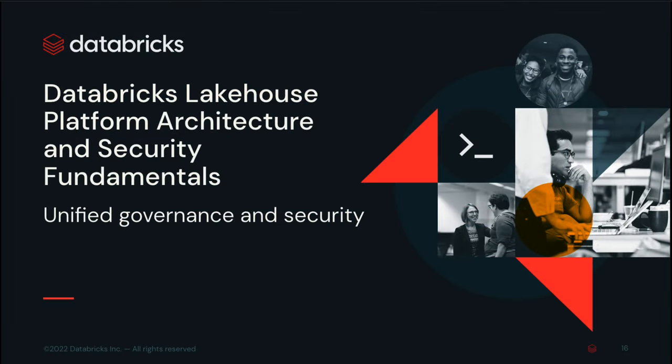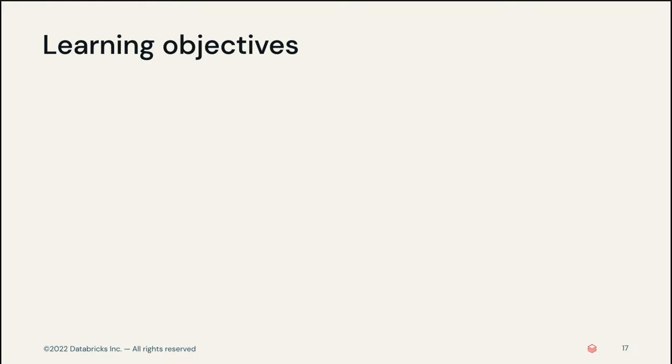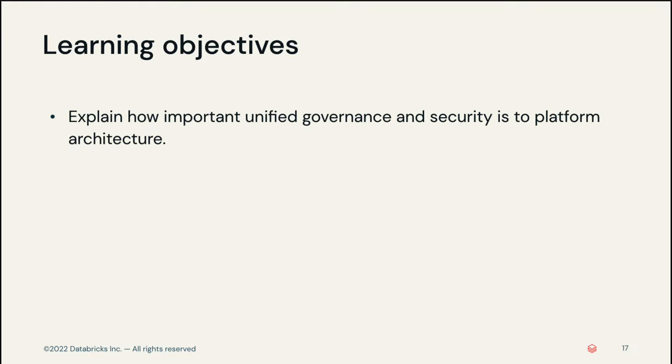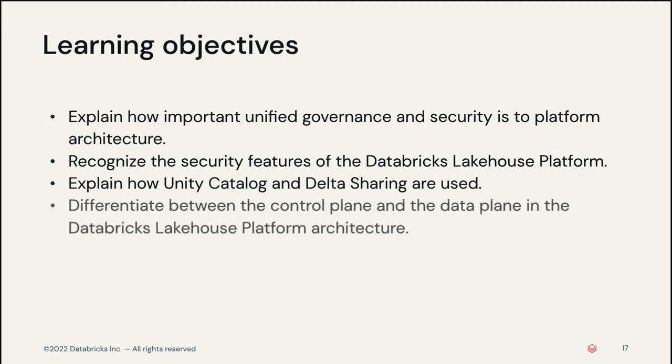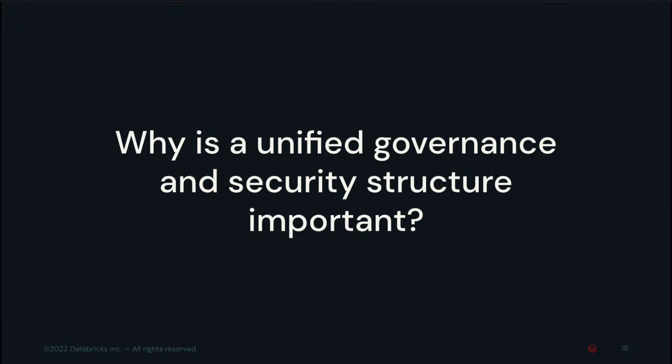Unified Governance and Security. In this video, you'll learn about the importance of having a unified governance and security structure, the available security features, Unity Catalog and Delta Sharing, and the control and data planes of the Databricks Lakehouse platform. While it's important to make high-quality data available to data teams, the more individual access points added to a system — such as users, groups, or external connectors — the higher the risk of data breaches, and any breach has long-lasting negative impacts on a business and their brand.